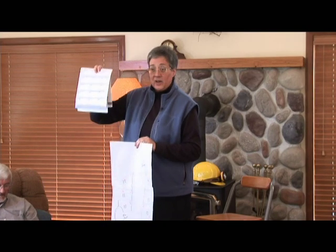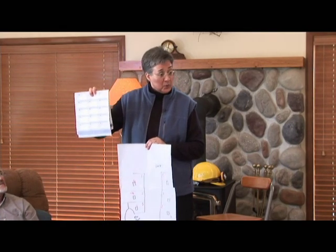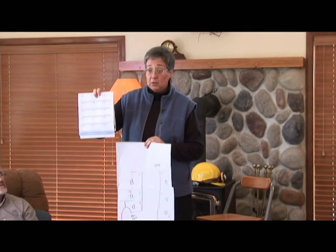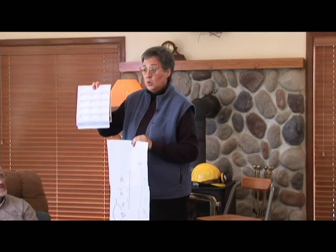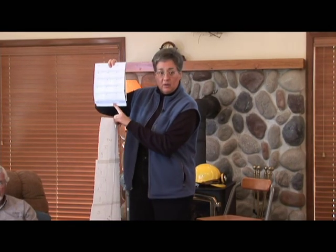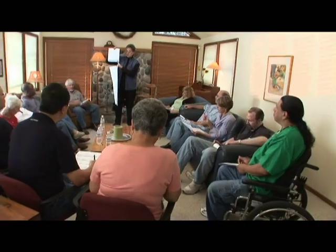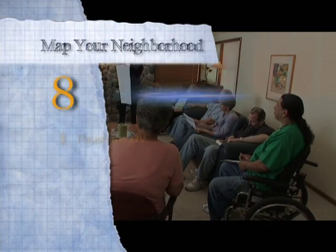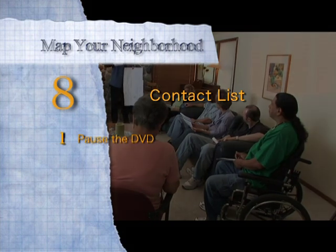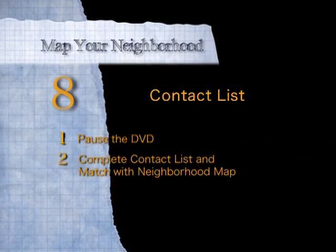This is the Francis Scott in our neighborhood — these are the children who might be home alone at the time of the earthquake. Who do we know that we want to capture on our contact list in the grayscale boxes? Pause the DVD and match the home you have labeled number one on the map with number one on the contact list.